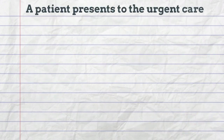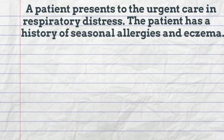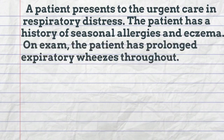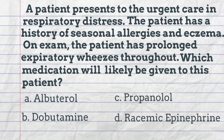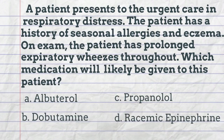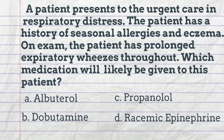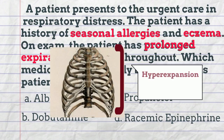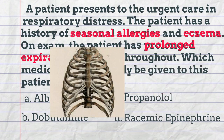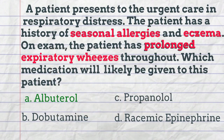A patient presents to the urgent care in respiratory distress. The patient has a history of seasonal allergies and eczema. On exam, the patient has prolonged expiratory wheezes throughout. Which medication will likely be given to this patient? Albuterol, dobutamine, propranolol, or racemic epinephrine. Common historical features in patients with asthma include allergies, eczema, or asthma experienced by the patient or family members. Exam findings during an exacerbation include prolonged expiratory phase with wheezing. Because this patient has positive history and exam findings consistent with asthma, albuterol is the first-line treatment for exacerbation.